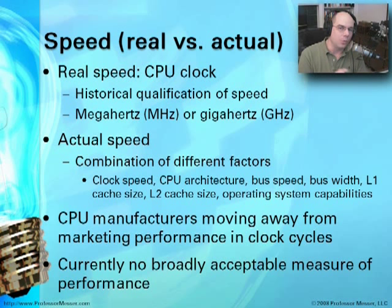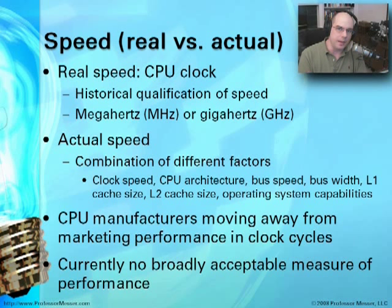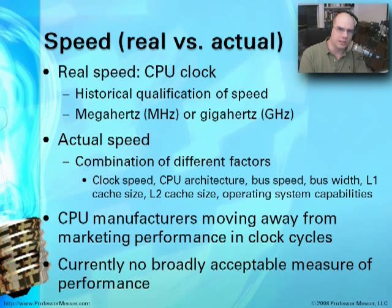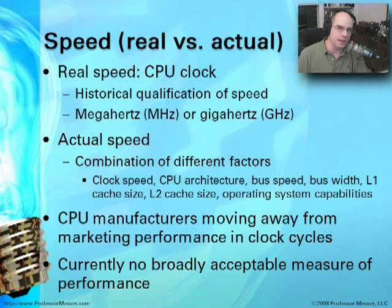When comparing one system to another, there's no broadly acceptable single measure of performance, which makes it difficult. You often need to use third-party benchmarking tools. Different benchmarking programs focus on different parts of the system — some on CPU performance, others on graphical performance. There are websites where you can find pre-run benchmarks for different systems, but for really detailed information, you'll want to look at many different kinds of benchmarks across different systems.